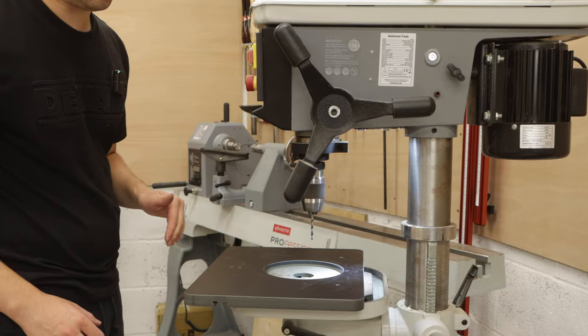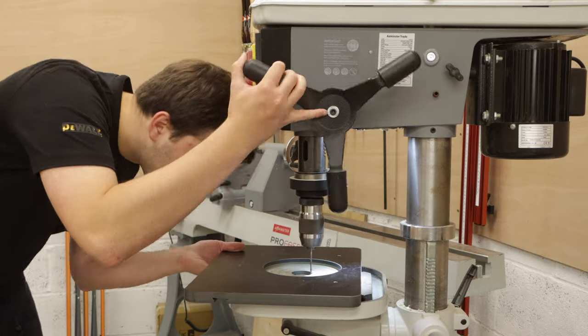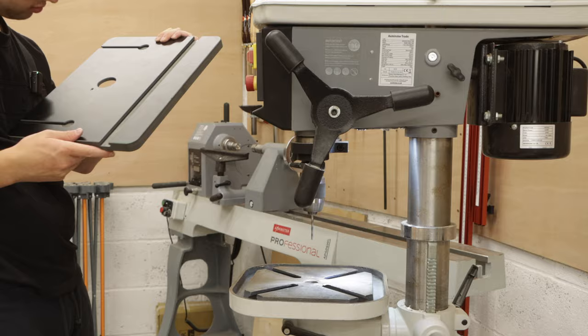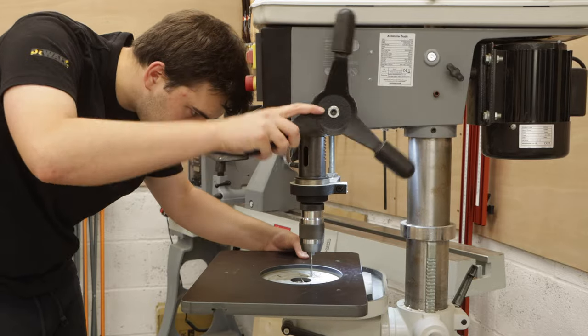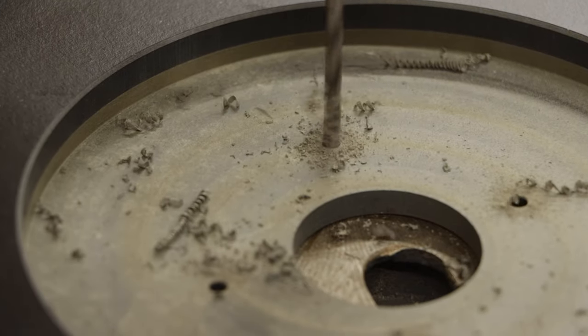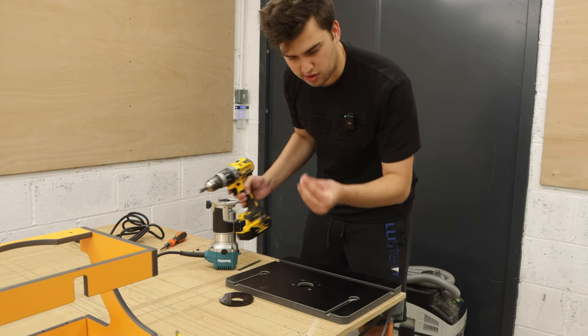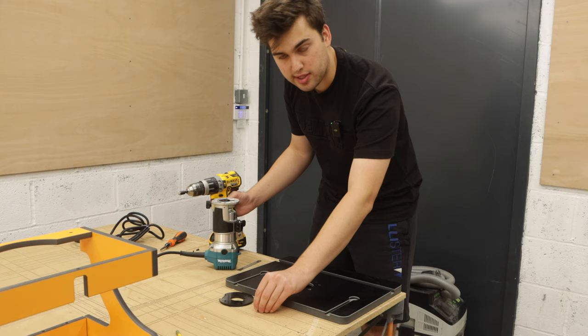Now I'm going to drill out those holes. I'm using the pillar drill so that I'm drilling perfectly straight. Now I'm going to countersink these holes so the head of the screw is below the top of the table.